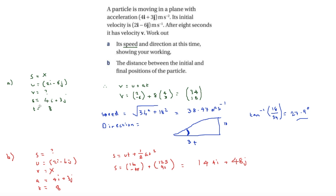But that isn't quite finished, as it asks for the distance, not the displacement. We need to take the magnitude: the square root of 144 squared plus 48 squared, which equals 152 meters.